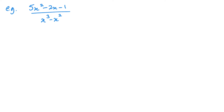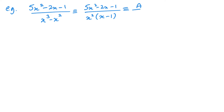So take this question. We want to split it up into separate fractions. The first thing I want to do is factorise the bottom. Looking at the bottom, I can take an x squared out, leaving me with an x minus 1. So this means I've got a over x from the x squared, then b over x squared, plus c over x minus 1. This is where people go wrong — they forget about the x and the x squared being separate.